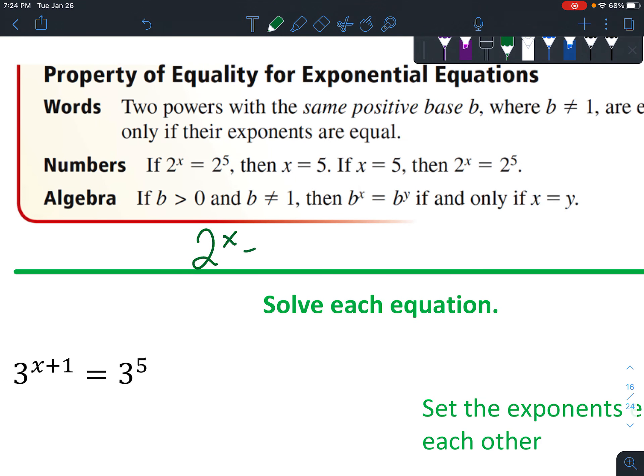Then this property says that means X has to equal 5, because the bases are the same, and that means the exponents have to also be the same if they're equal.